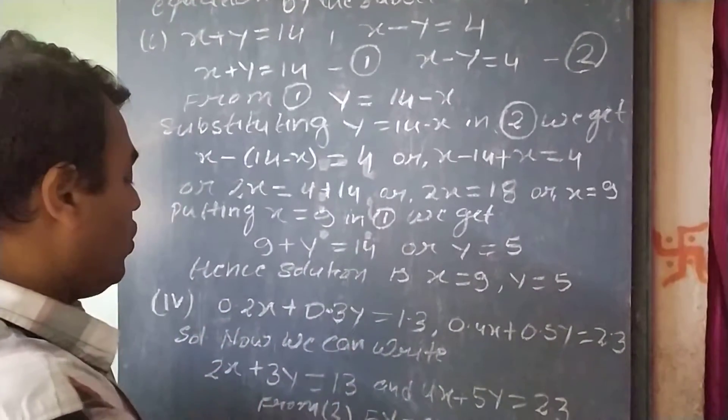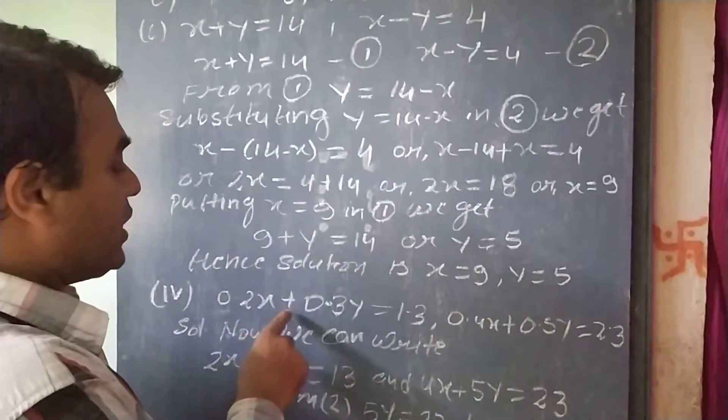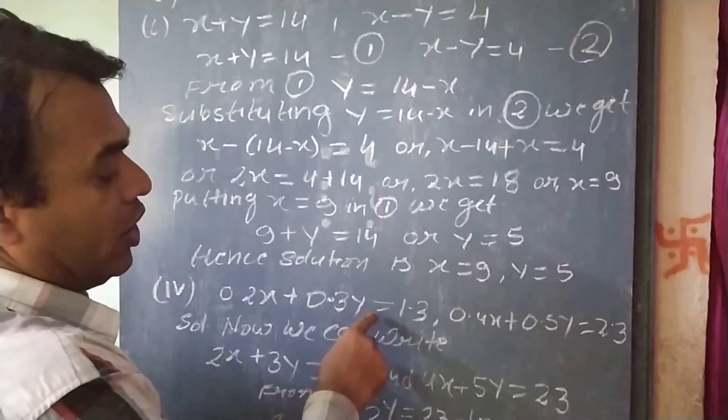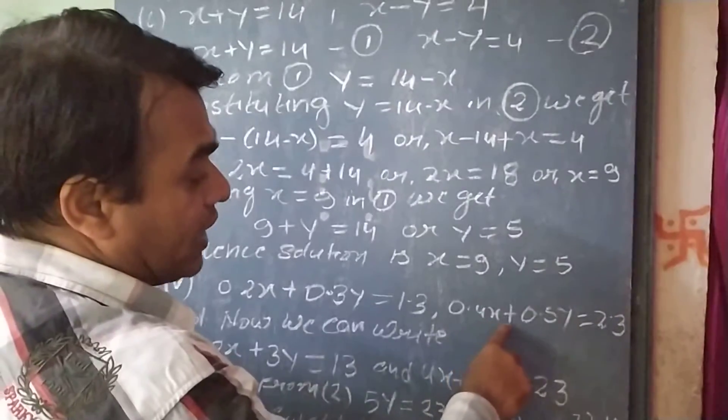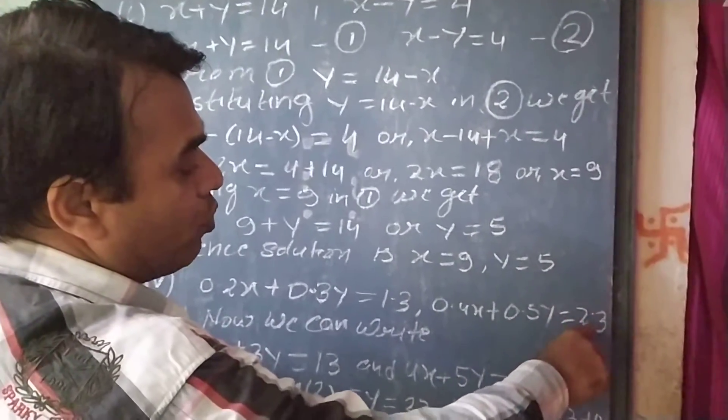Now, problem 1.4: 0.2x plus 0.3y equal to 1.3, and second equation is 0.4x plus 0.5y equal to 2.3.